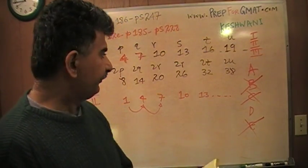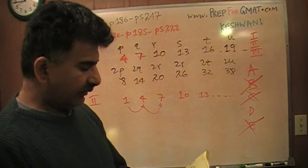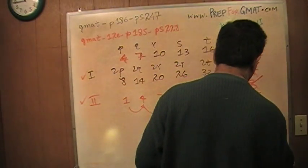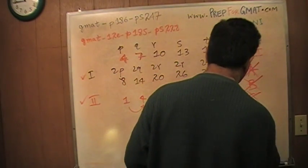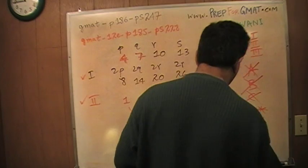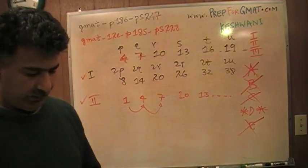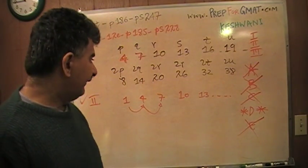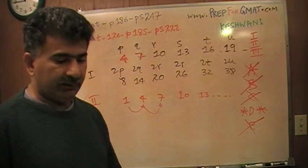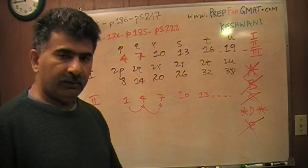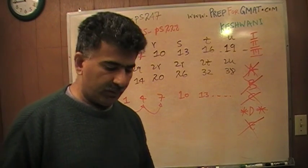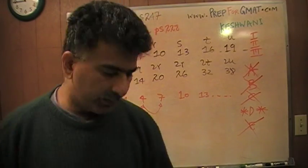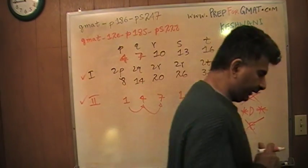Let's see what we can cross out now. A says 1 only — that's gone. There you go, the answer is D. That's the only one left standing. As far as the exam is concerned, we're done. The answer is D. But just for learning purposes, I'm going to show you why statement 3 does not work.